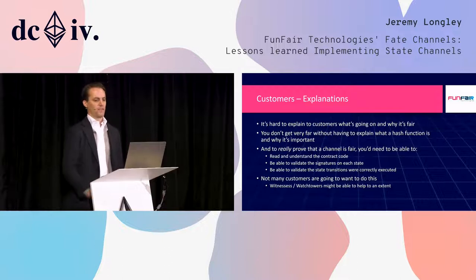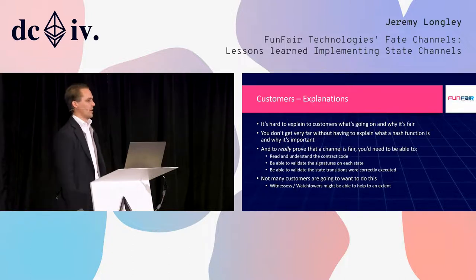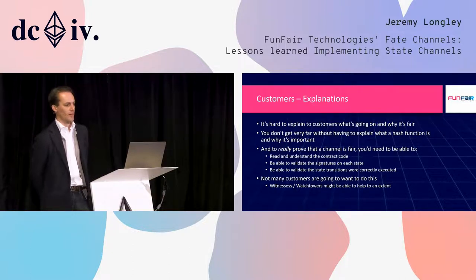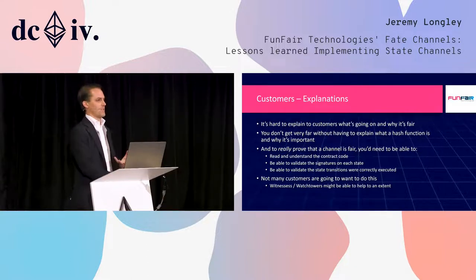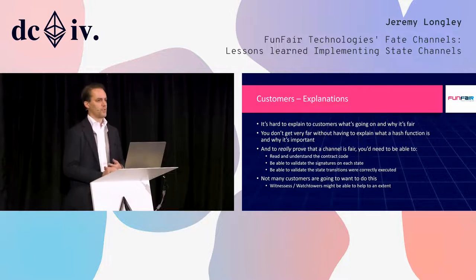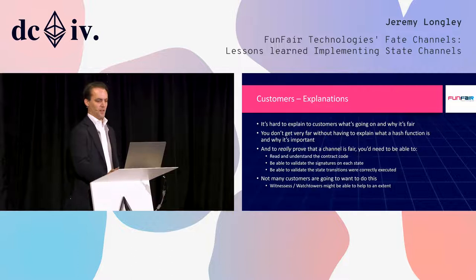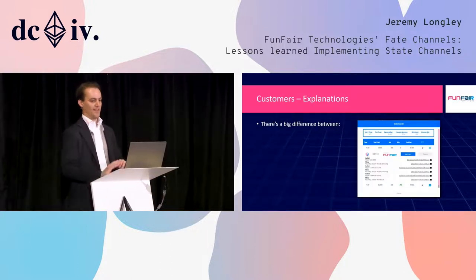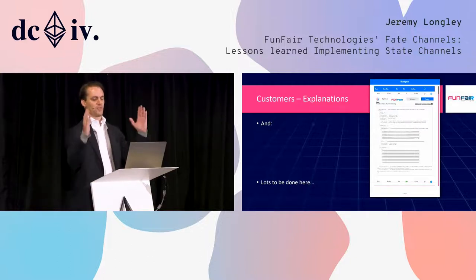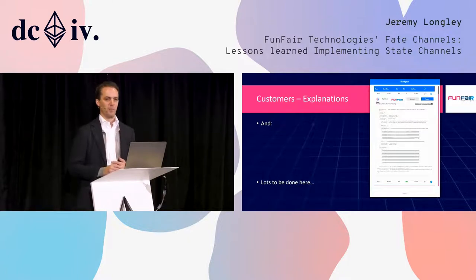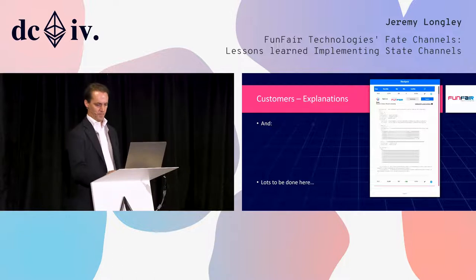It's hard to explain to customers what's going on and why it's fair. To talk about state channels, you can't get very far without explaining what a hash function is and why it's important. To really prove that a channel is fair, you need to be able to read the contract code, validate the signatures of each state transition, and validate that state transitions were correctly executed by both parties — which basically no one's going to do. There are some interesting ideas along the lines of witnesses or watchtowers that might help, but getting customers to understand what they're doing remains a challenge.